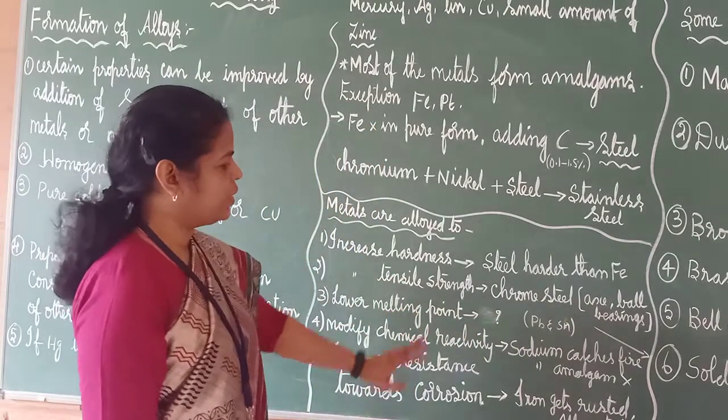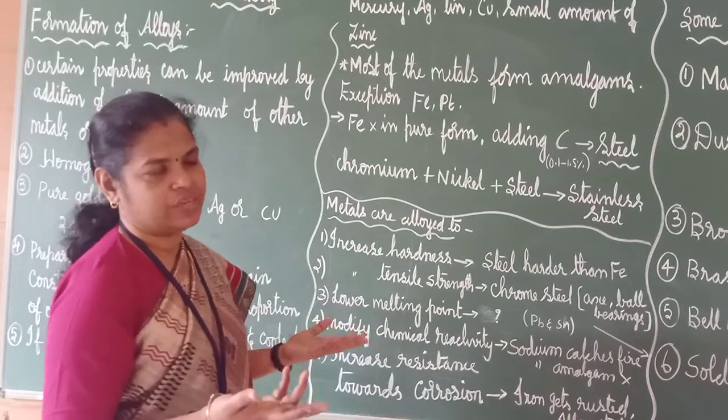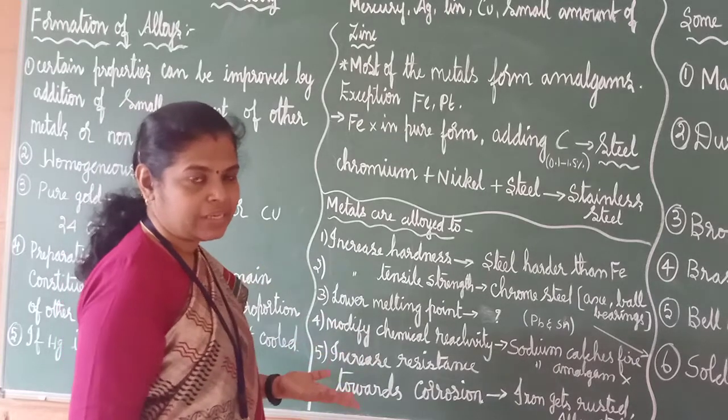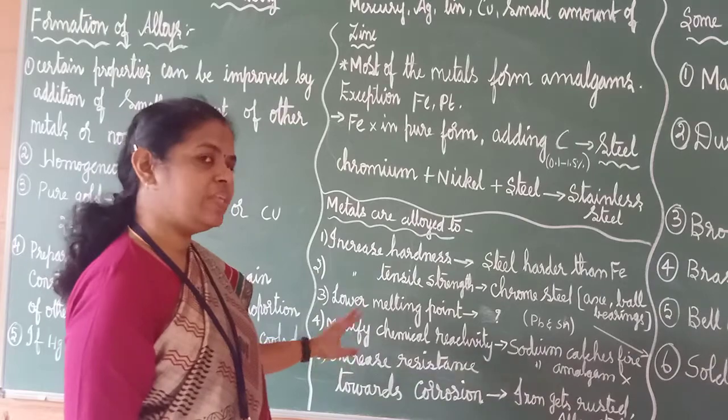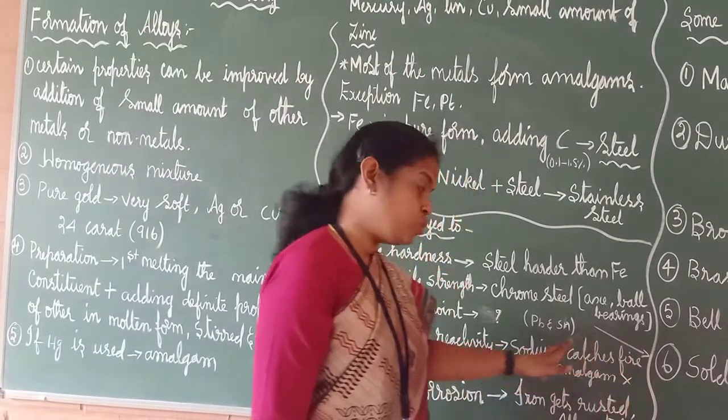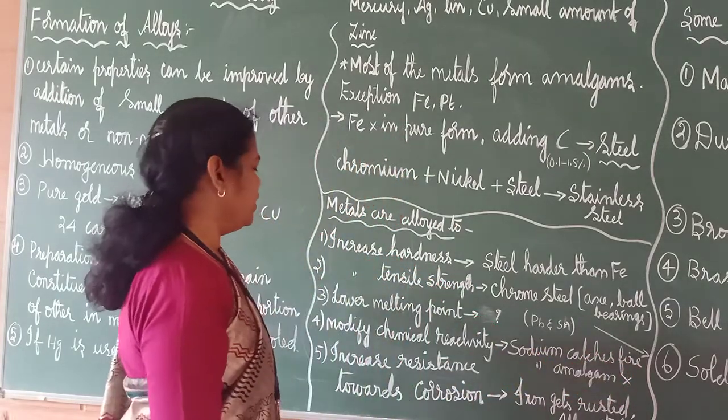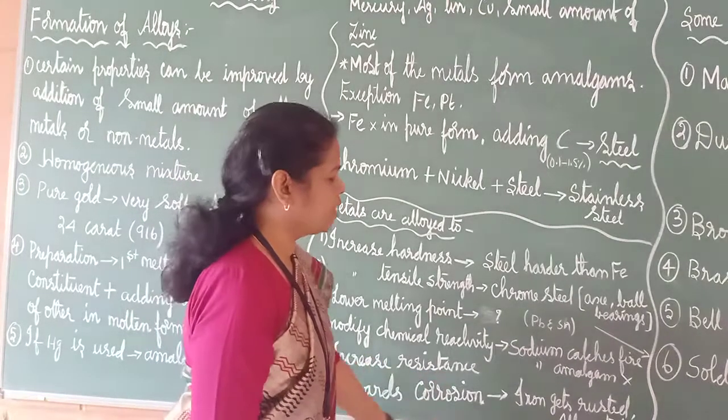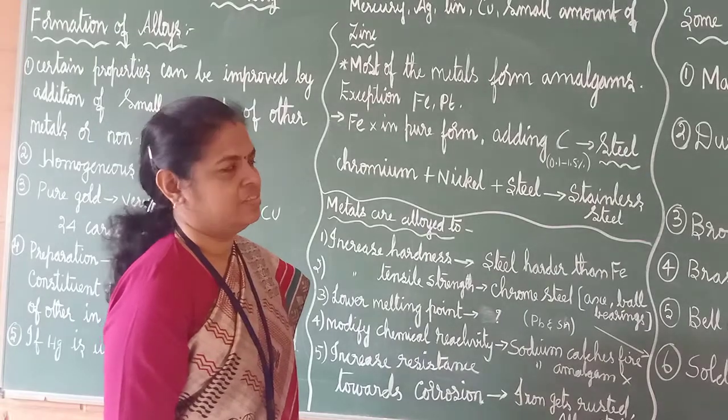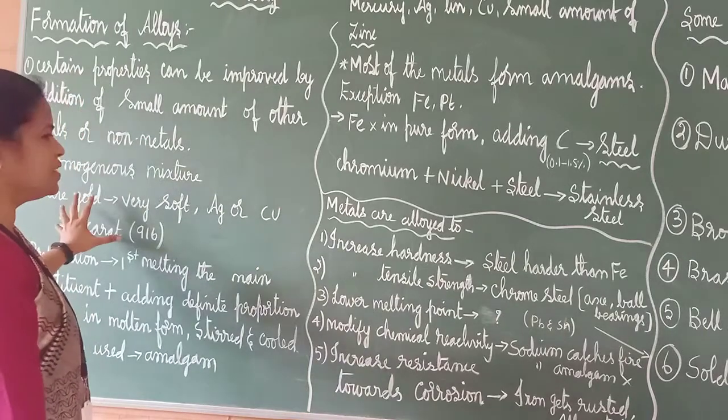It can modify the chemical reactivity. How it will modify? Sodium, it will catch fire. That is the reason we used to keep it inside kerosene. But sodium amalgam is not having that property. So, it will modify the chemical reactivity. Sodium catches fire, but sodium amalgam will not catch fire. So, the chemical property is modified. It increases the resistance towards corrosion. We all know that iron will get rusted, but alloy steel and all will not get rusted.